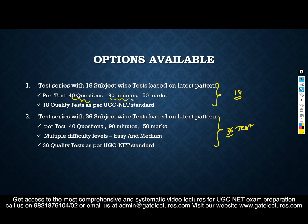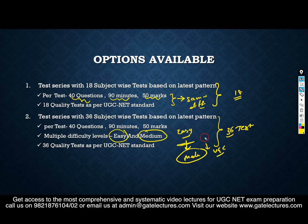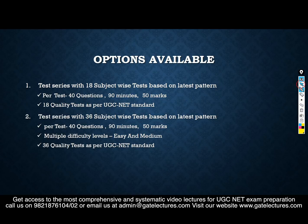In the 18-test package, every test is of the same difficulty level. In the 36-test package, there are two difficulty levels: easy and medium. You attempt the easy level tests first, then the medium level tests. The medium level is slightly above the UGC NET standard, so if you score well here, you will score really well in the actual examination.